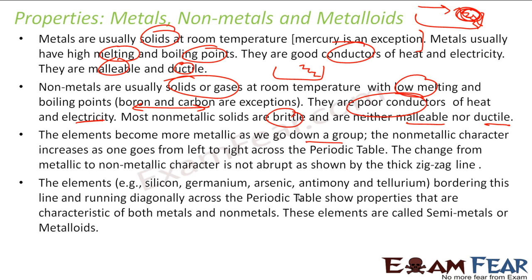Elements like silicon, germanium, arsenic, antimony and tellurium are the elements which border this zigzag line. These elements have properties of both metals and nonmetals, and they are sometimes called semi-metals or metalloids.